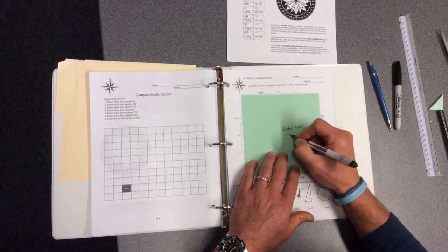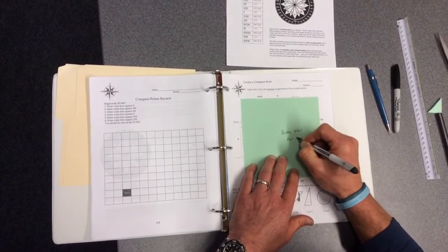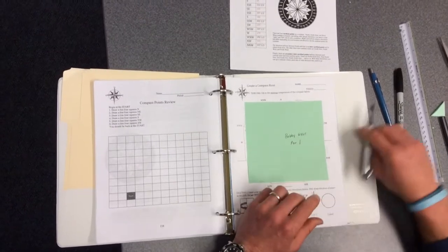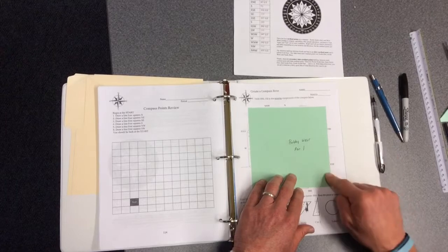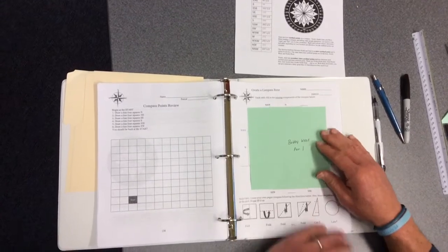Include your class period. The paper is 6 inch by 6 inch. Once you have that filled out, then turn your paper over.